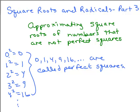We're starting with the whole numbers 0, 1, 2, 3, 4, et cetera and that's how we decide what the perfect squares are. So the question is: what if we take something and we want to take the square root of it but it's not a perfect square? Square root of 4 is a perfect square so it's 2, square root of 25 is 5, et cetera. No problem.